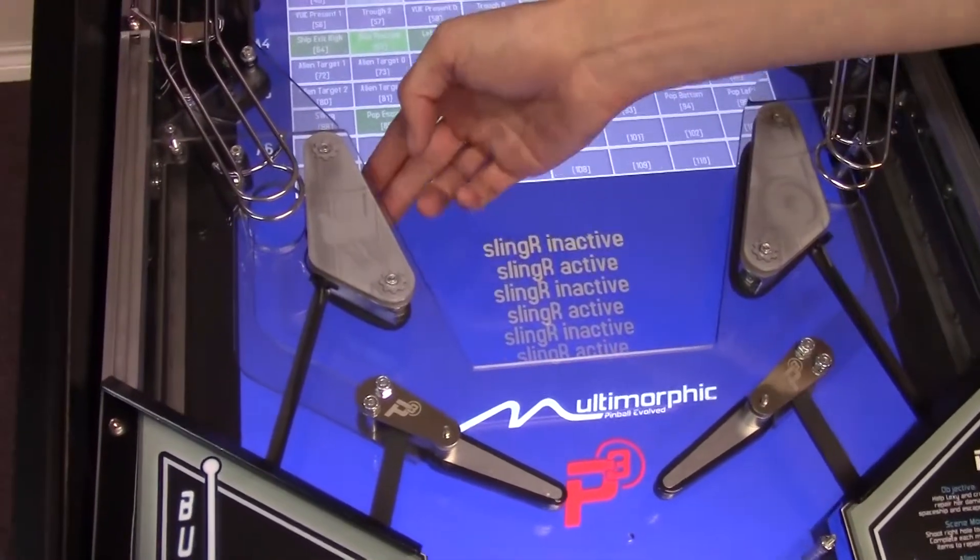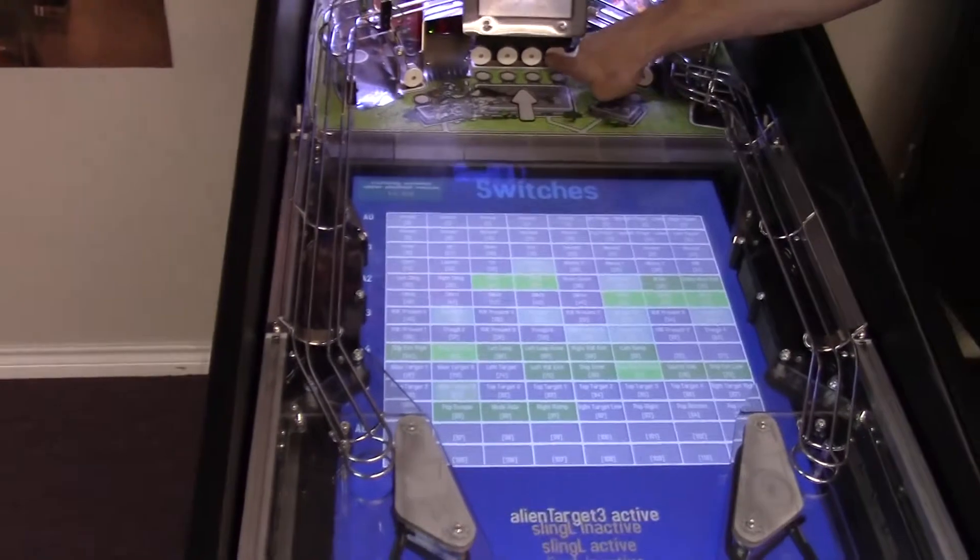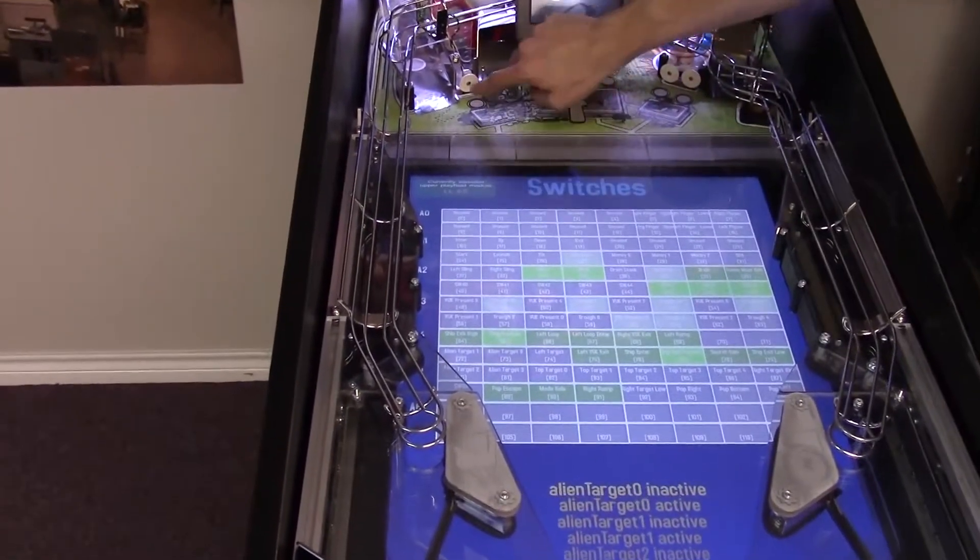Right sling, left sling, and then there are things on the upper playfield, for instance these targets on the playfield themselves.